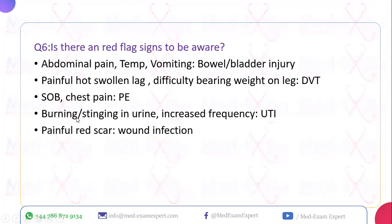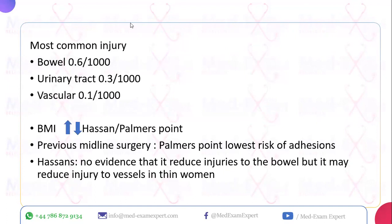For post-operative red flag signs, advise the patient to return if she experiences: abdominal pain, spiking temperatures, or vomiting — which could indicate bowel or bladder injury; painful, hot, swollen leg with difficulty bearing weight — which could indicate DVT; shortness of breath or chest pain — pulmonary embolism; burning or stinging on urination with increased frequency — UTI; or a painful, red wound — wound infection. Provide a patient information leaflet at discharge — this is a patient safety point. For confirmed endometriosis, post-operative hormone treatment can be given according to RCOG guidelines.